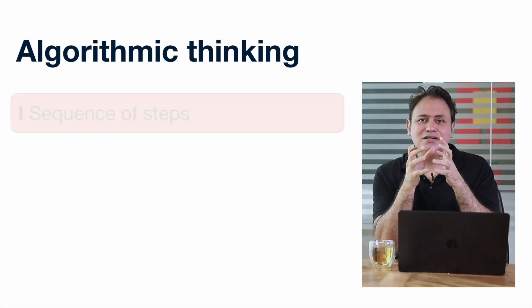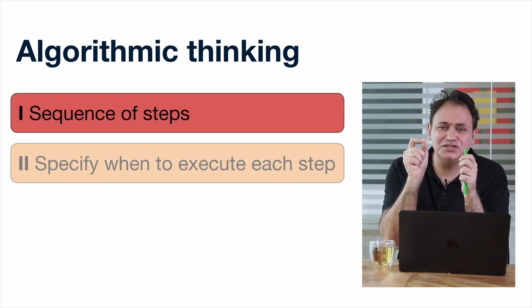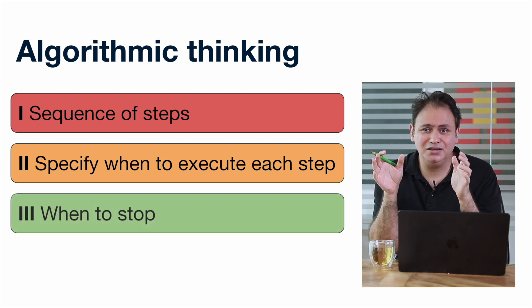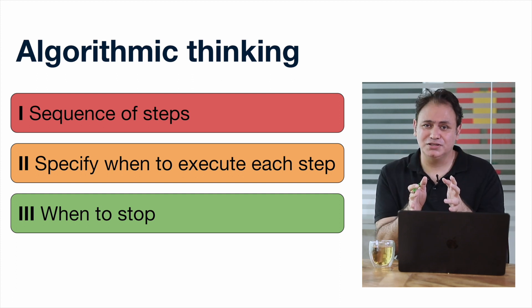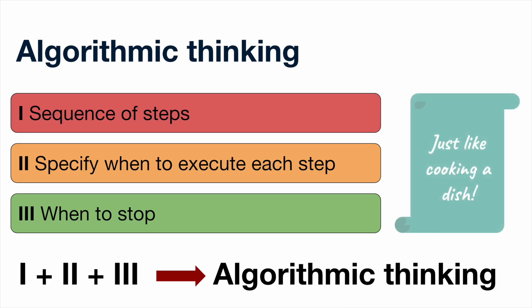So essentially you can break this up into two components: one is a statement of fact, and the second is how to do something, how to get somewhere. The second component is algorithmic thinking. Think of it as a three-stage process: stage one is a sequence of steps; stage two is deciding and specifying when the steps are executed; and stage three is identifying or specifying when to actually stop. Put these three together and this constitutes an algorithmic way of thinking — essentially, you have created an algorithm. This is essentially just like cooking or making any dish.